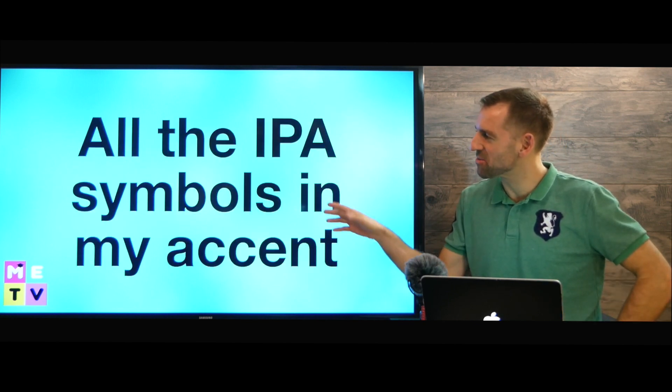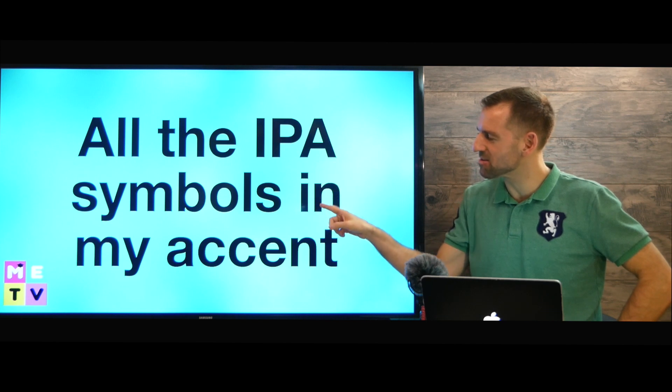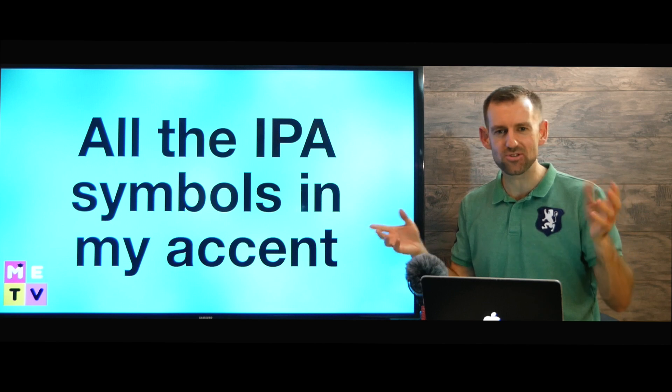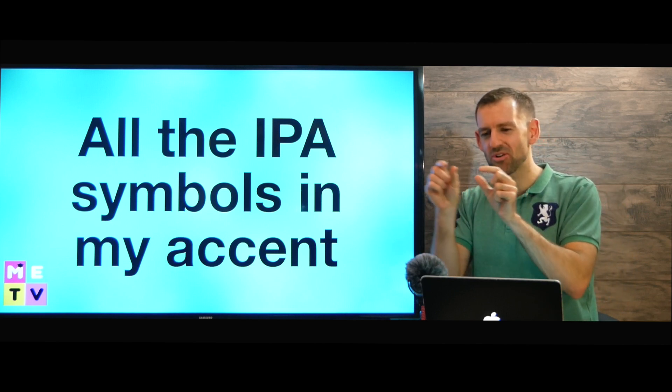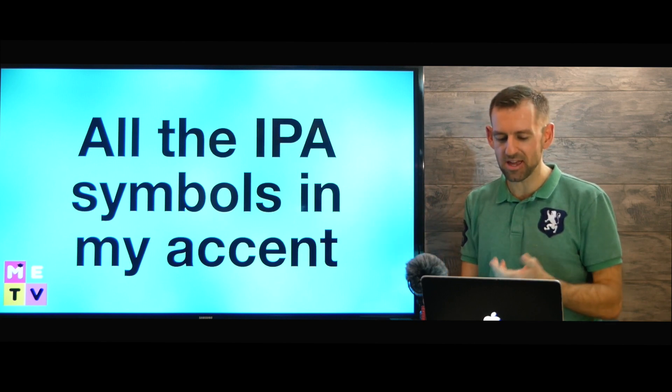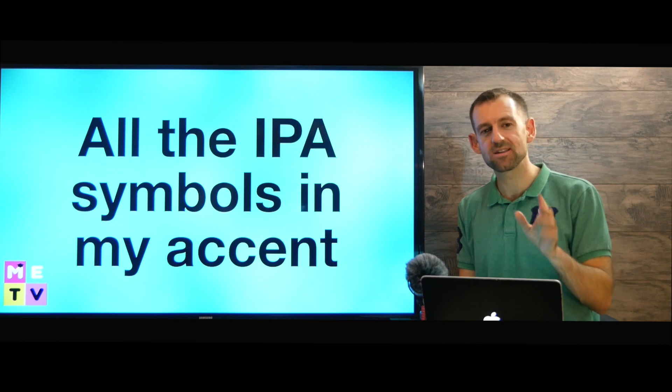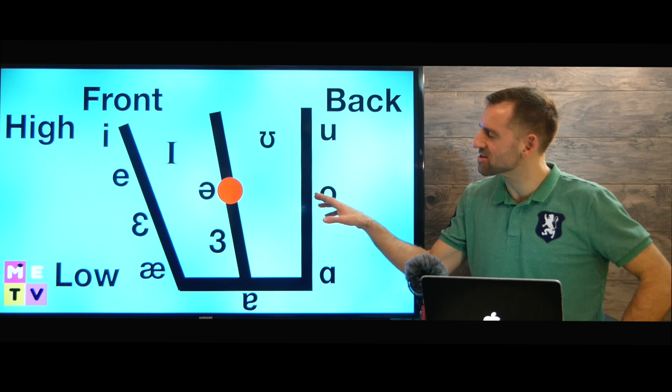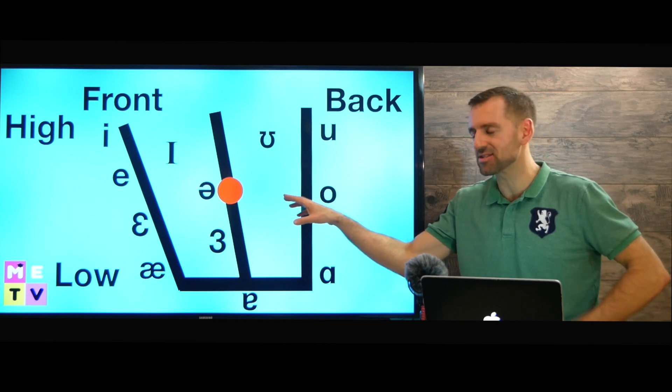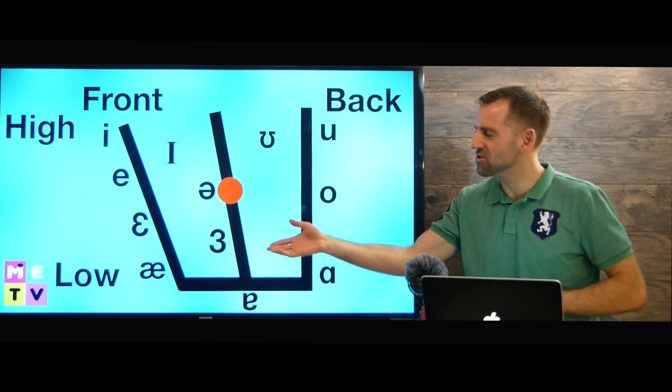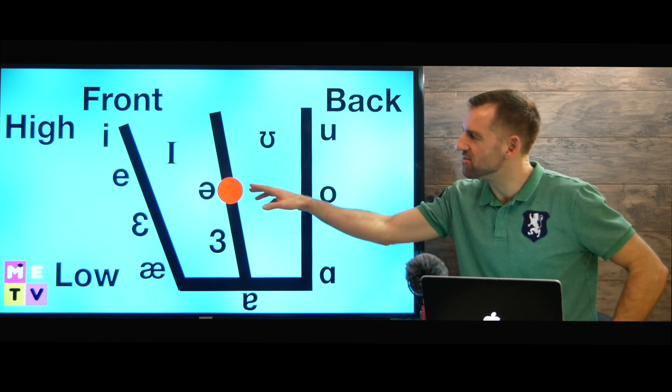So in this lesson, I'm going to show you all the IPA symbols in my accent. English is a very broad language. There's lots of different accents. And you know, the symbols are all a little bit different for each accent. But here, I'm going to show you all of them in my accent. There's about 40 sounds in my accent. So let's start with the vowels.